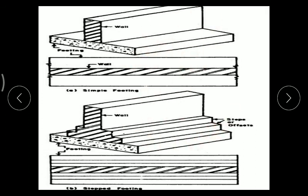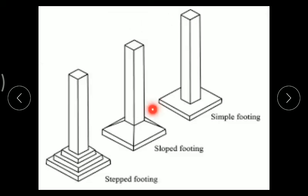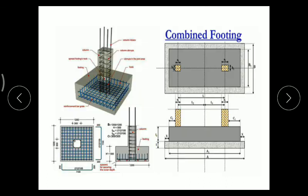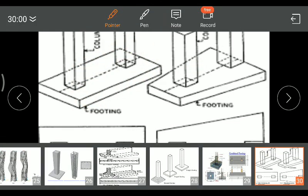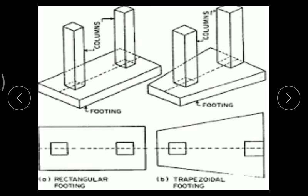As far as load-bearing structures are concerned, if the wall is carrying some load, we provide a wall footing — it can be a simple strip or stepped footing. To carry the load of a single column, we use isolated footing. To support two columns, a combined footing is provided. If the loads on two columns are identical, we use a rectangular combined footing. If one column carries a greater load, we use a trapezoidal combined footing.